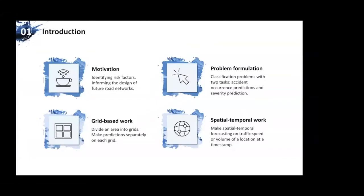The talk covers: motivation and problem formulation, the process of building datasets, the proposed TRAVEL framework, and a brief analysis of experiment results. The motivation is to learn which environmental features lead to a higher chance of accidents — beyond human factors like speeding or drunk driving — to identify accident hotspots and inform future road network design. We formulate this as a node classification problem with two tasks: accident occurrence prediction and accident severity prediction.